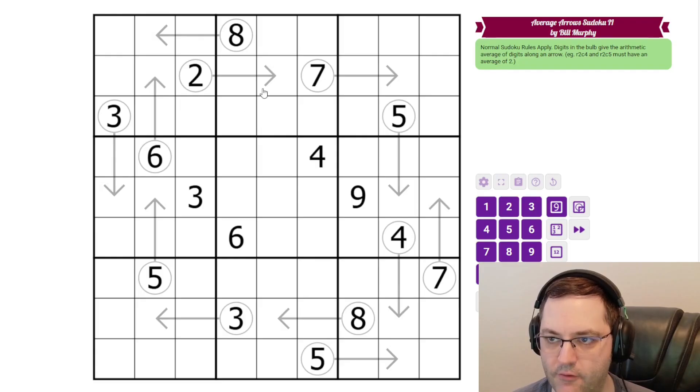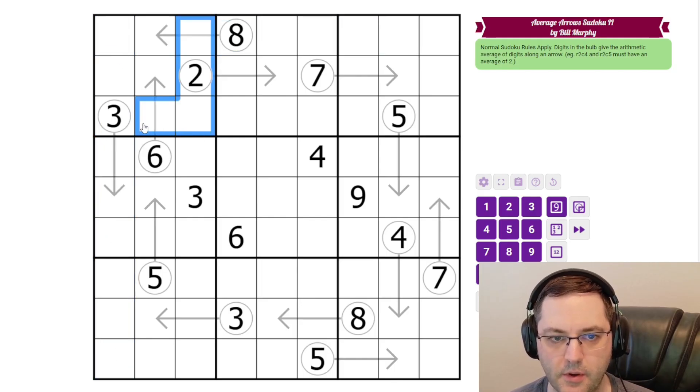As the name implies, we've done average arrows before. So we have normal Sudoku rules, of course, one to nine in each row, column, and three by three box.